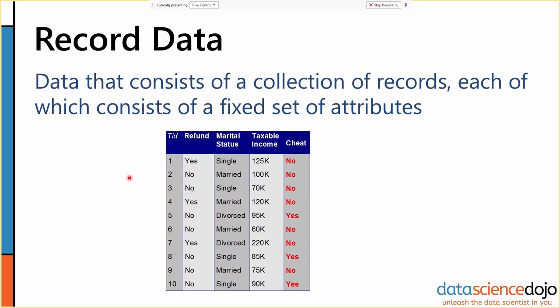This tax data set is an example of record data: each object has a tax ID, a value for whether they asked for a refund, marital status, taxable income, and whether they cheated on their taxes. Record data is almost always represented as a table — a database table or spreadsheet — and it's the most common kind of data. A lot of people will visualize only record data when they think of data or data sets.